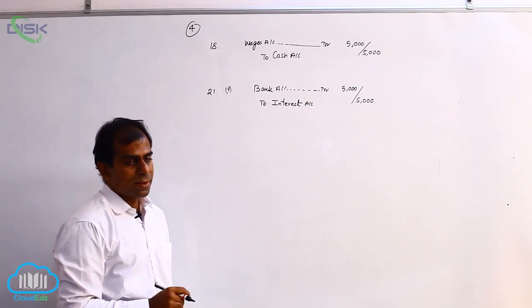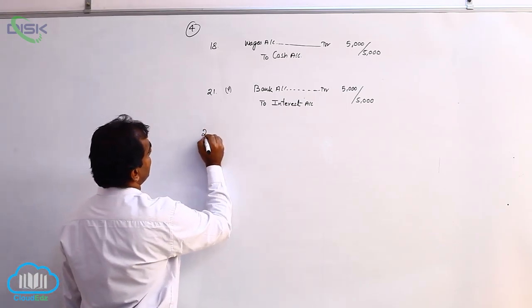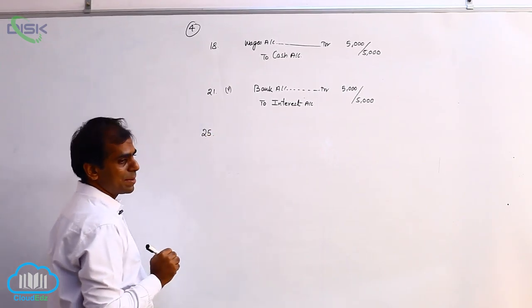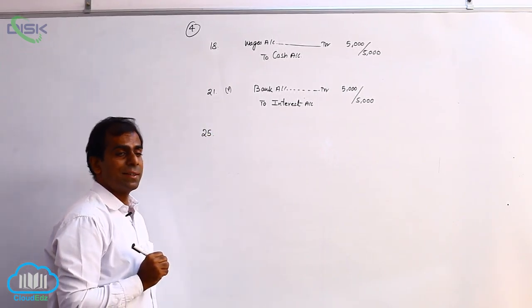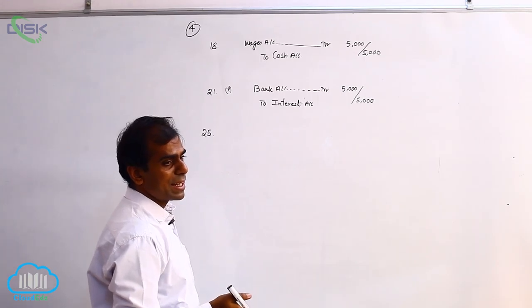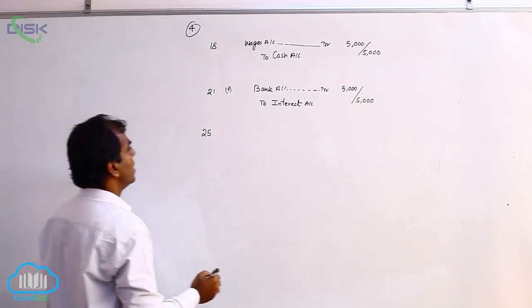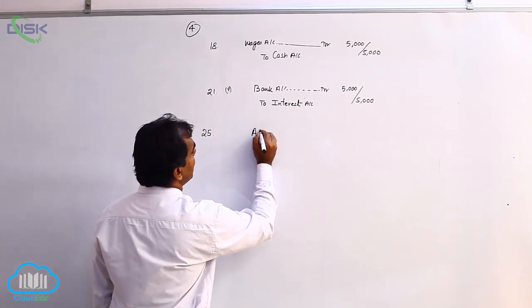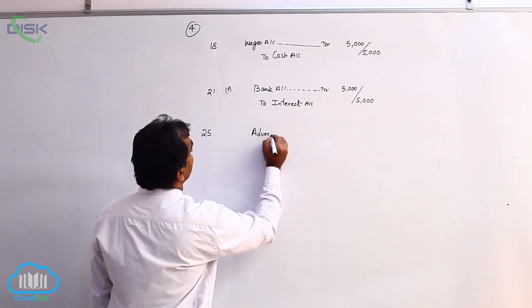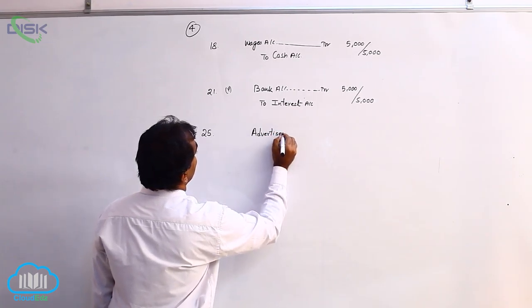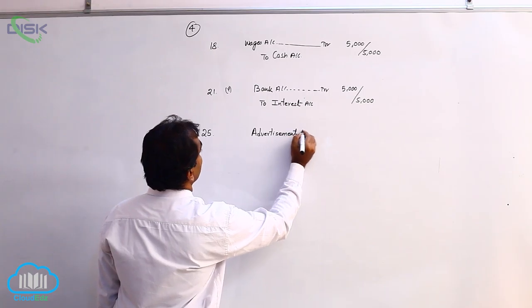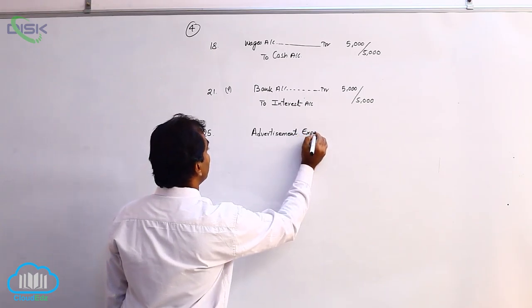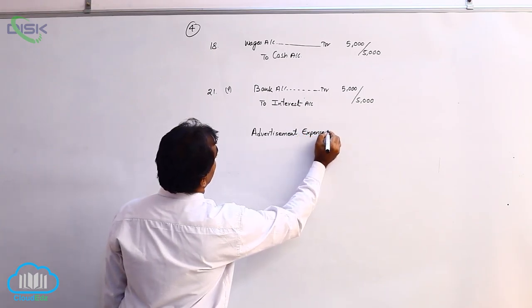Now the last transaction is on 25th which is advertisement expenses. Naturally being expense we would have paid in cash. Recalling the rule of nominal, for advertisement we will write it as advertisement expenses which we will debit because expenses have to be debited.